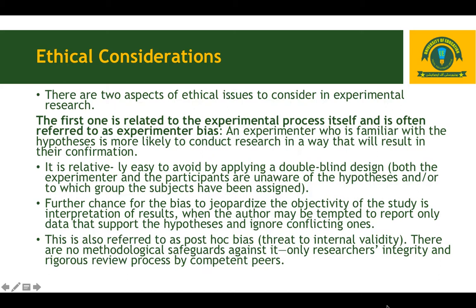The first aspect is related to the experimental process itself, and is often referred to as experimental bias. An experimenter who is familiar with the hypothesis is more likely to conduct research in a way that results in its confirmation.